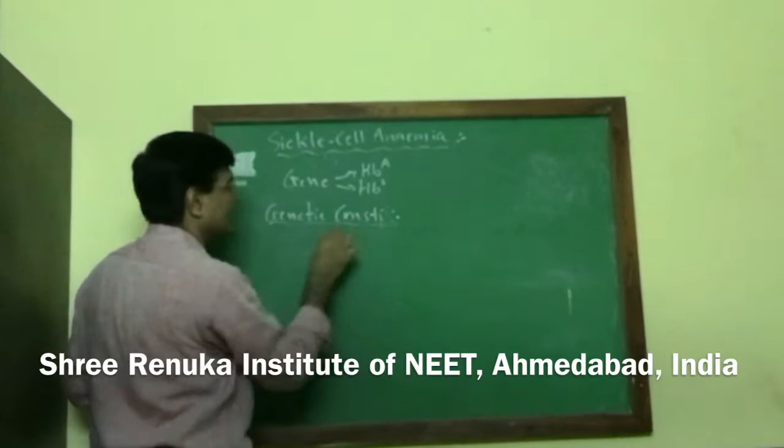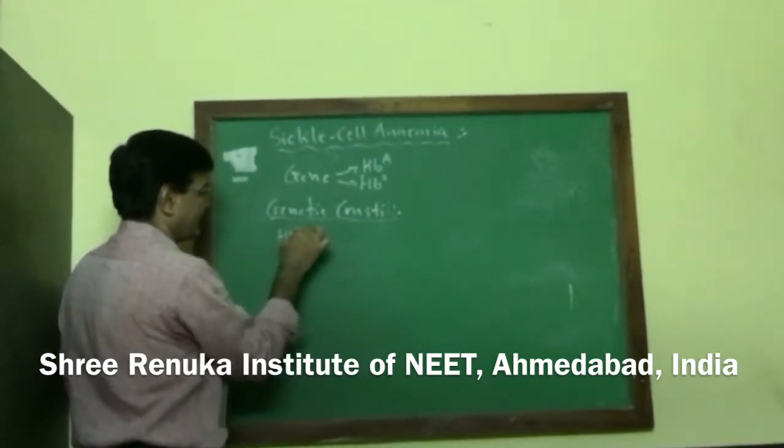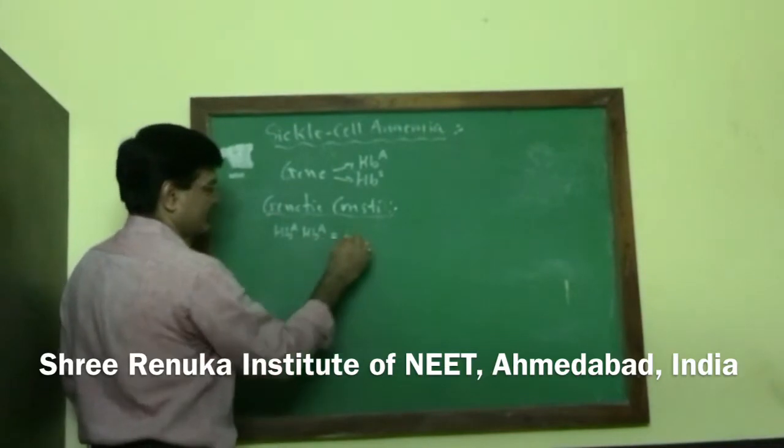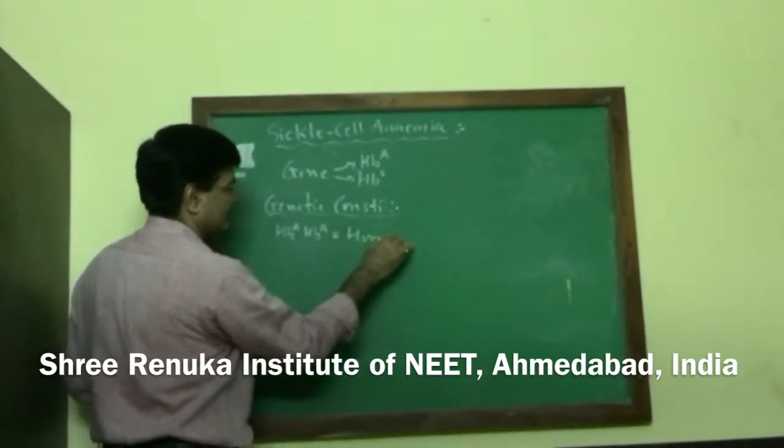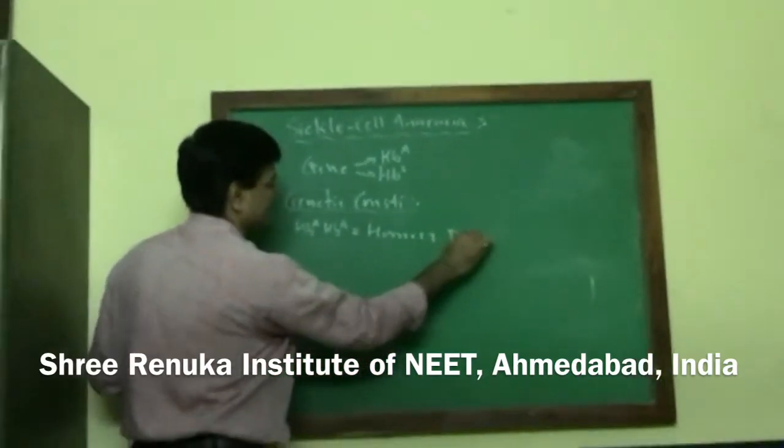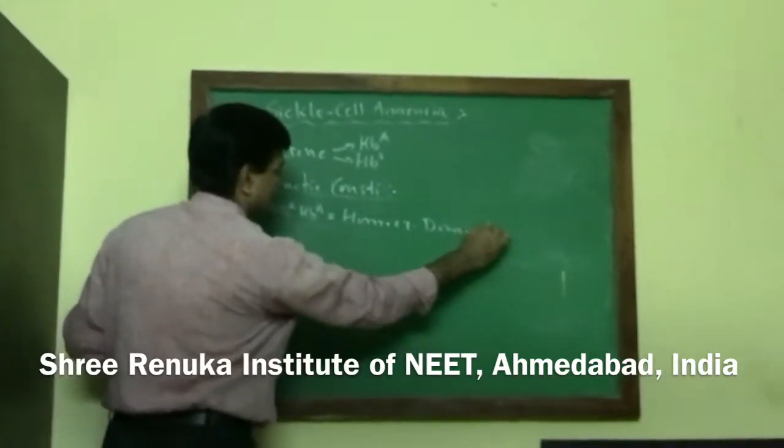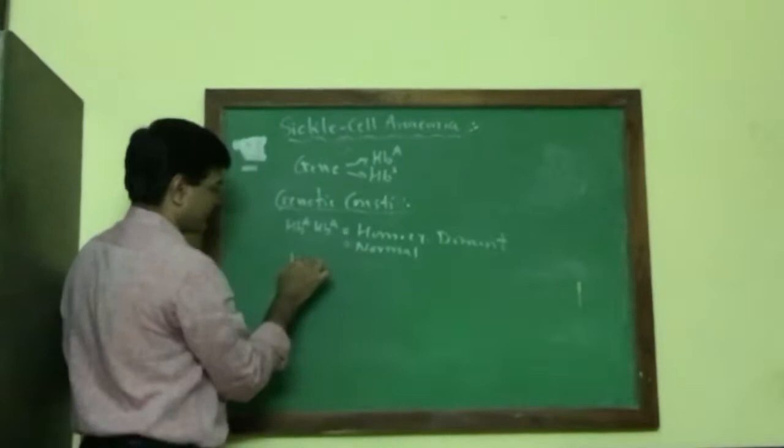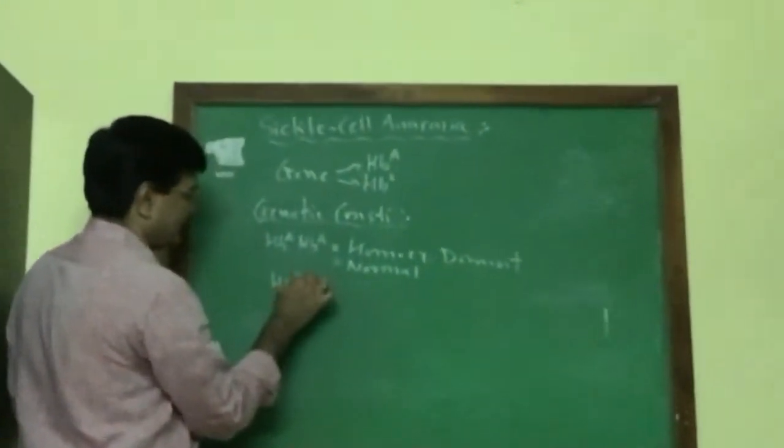If the genetic constitution of an individual is HBA HBA, this is a homozygous dominant condition and the individual is normal.